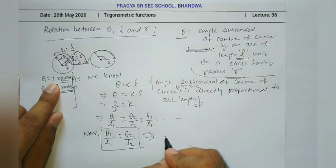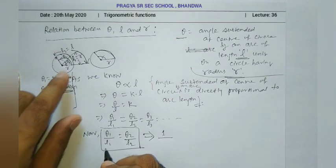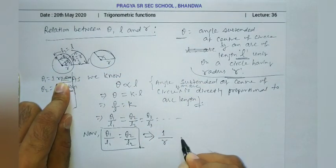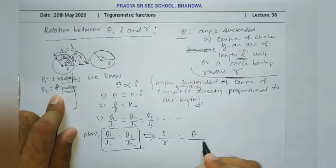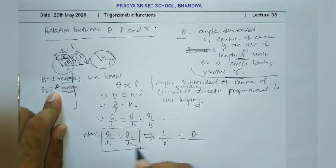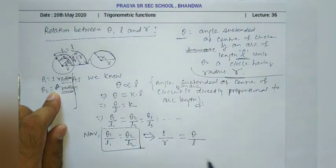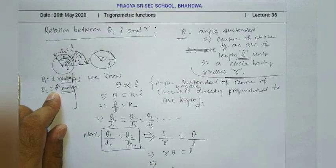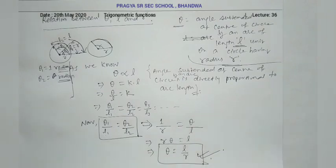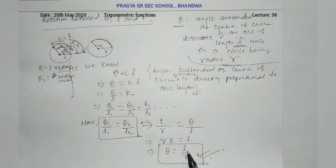Theta1 is 1 radian, and L1 at that time is R. Theta2 is theta, and L2 is L. So: 1 radian upon R equals theta upon L. Cross multiply: R times theta equals L. This implies theta equals L by R. So theta equals L upon R. This is the relation between theta, L, and R that we will use in many problems.